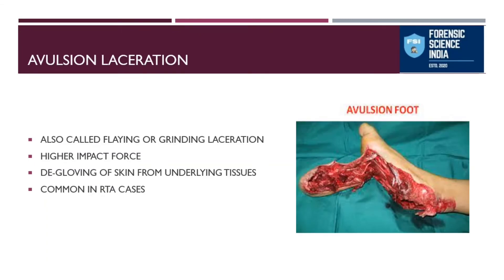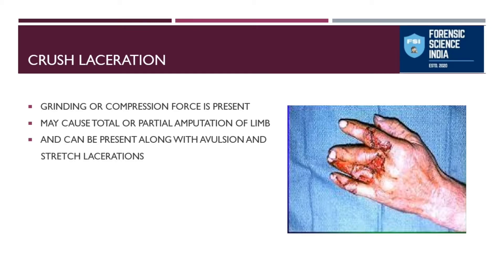Avulsion laceration, also known simply as avulsion or degloving/grinding laceration, refers to separation of the skin from the remaining part of the body. It is called grinding laceration because a grinding force is used. It is commonly present in RTA cases — when the wheel of a vehicle grinds on the skin surface, it may cause such degloving of skin from the underlying tissues, caused by very high impact force.